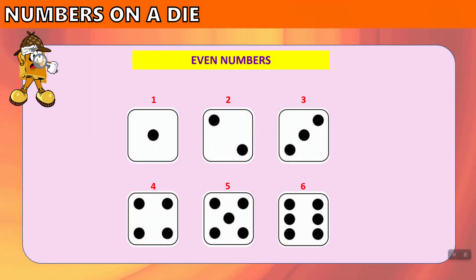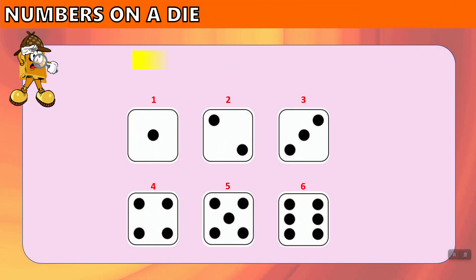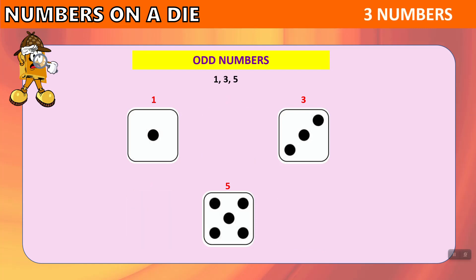We can determine the different types of numbers on the die. The even numbers are 2, 4, and 6 — so there are three even numbers on a die. We can also look at the odd numbers: 1, 3, and 5. There are three odd numbers on a die as well.